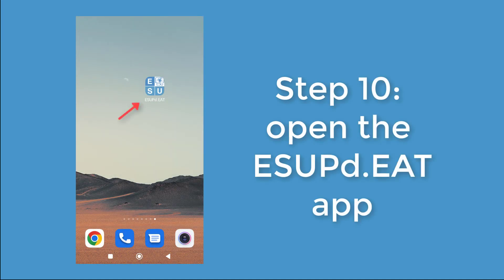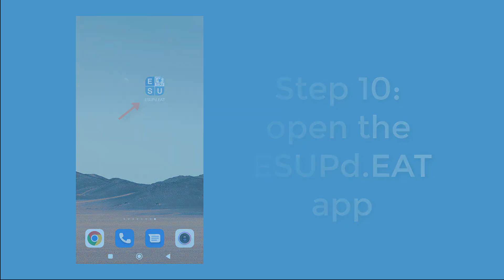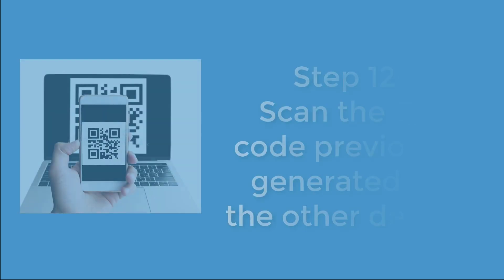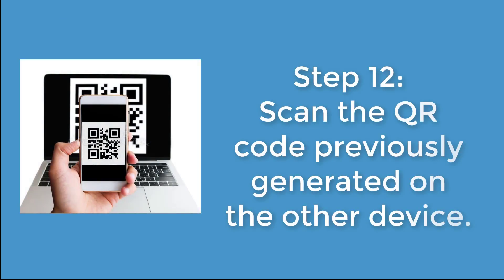On the smartphone, open the esopd.it app and click on Inquadra un QR code. Allow access to the camera if prompted. Then scan the association QR code previously generated on the other device.